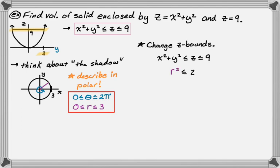So really, r squared less than or equal to z less than or equal to nine. So we're really close now to just kind of finishing this problem. We found all of our bounds. Let's take a look.